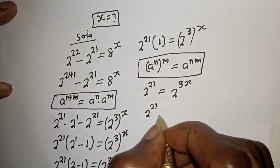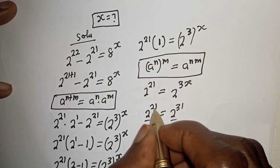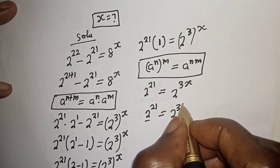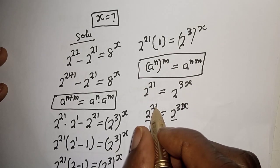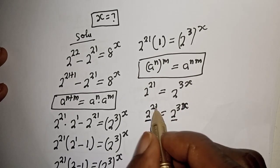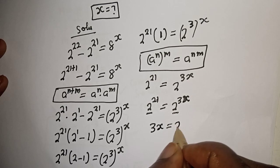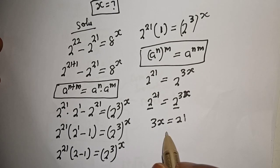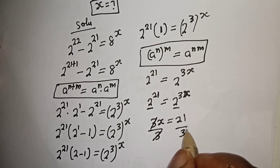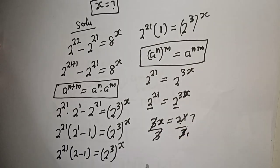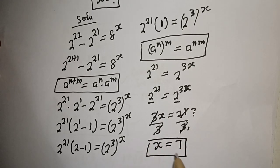2 raised to power 21 is equal to 2 raised to power 3x. They have the same base 2, so we work with the exponents. 2 raised to power 21 equals 2 raised to power 3x, and since they have the same base, 3x is equal to 21. We are looking for the value of x, so divide both sides by 3: x is equal to 7. This is the final answer.